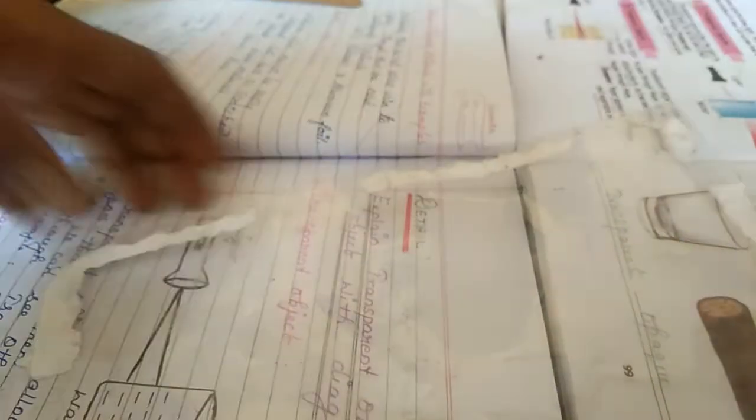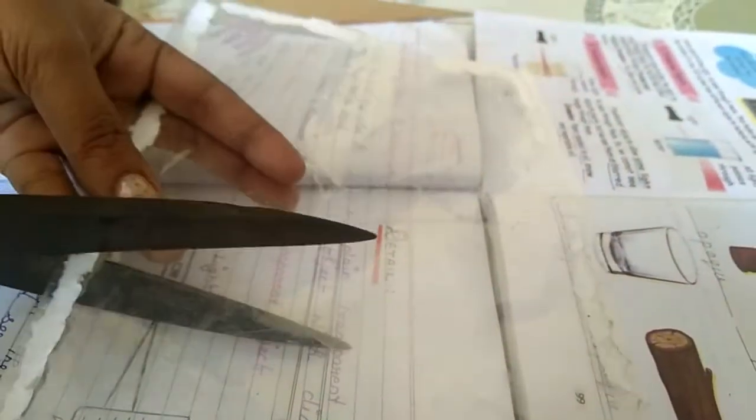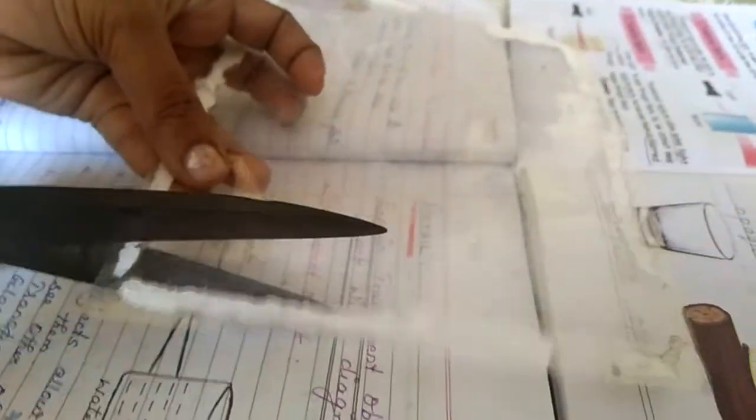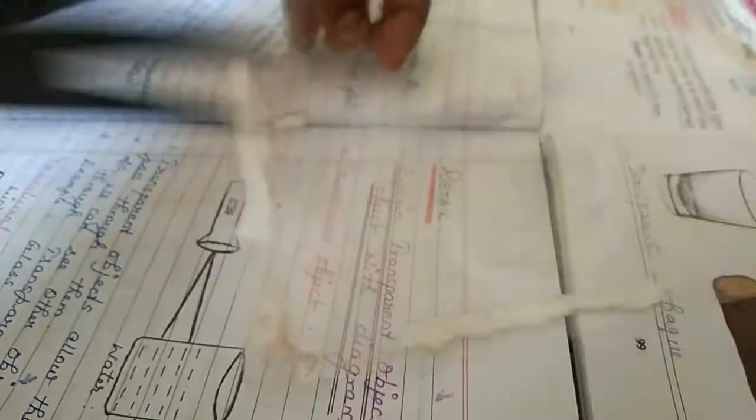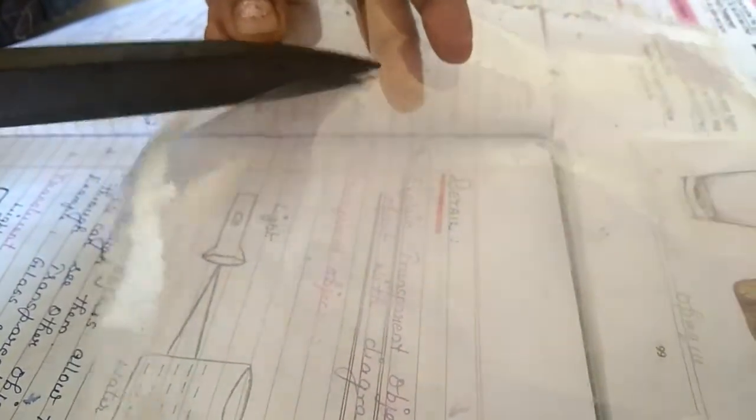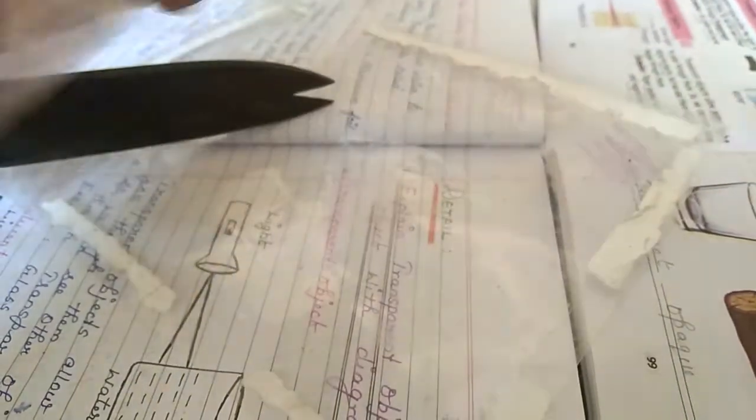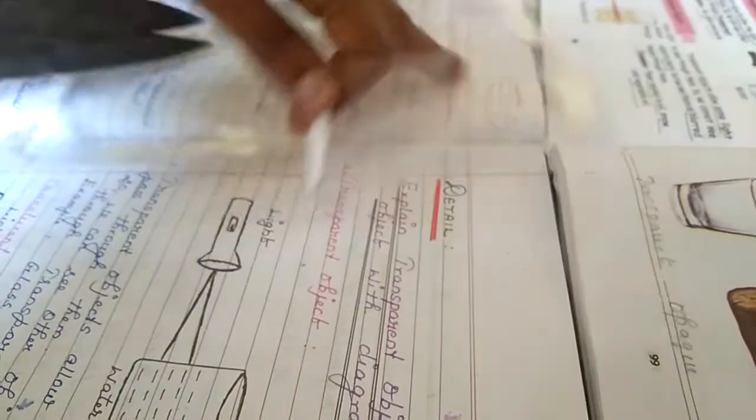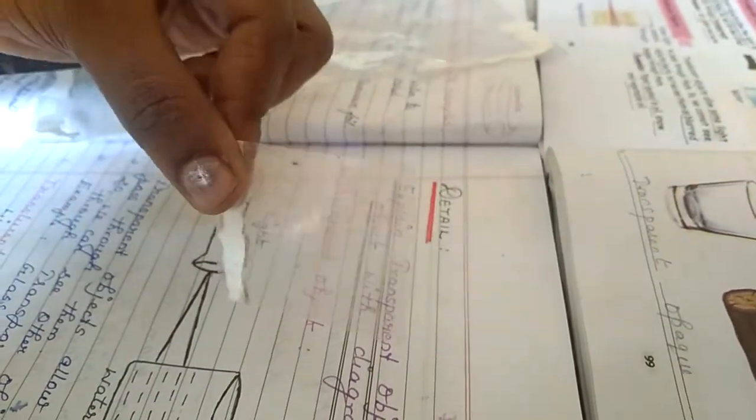Now we are going to cut it for transparent object. We will cut it now. Just take some rectangular piece. See, look at here, I took a small rectangular piece.